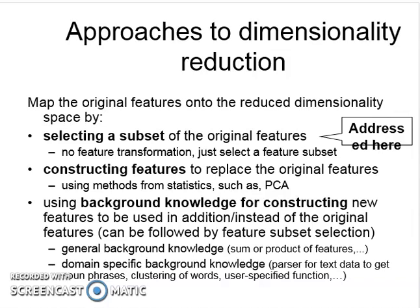The third approach is constructing features to replace the original features, using techniques such as PCA — we will see in the next video what PCA is. The fourth approach uses background knowledge to construct new features. Suppose domain-specific background knowledge is given; using that, we construct new features in addition to or instead of the original features. General background knowledge examples include products of features, noun phrases, clustering of words, and different types of user-specific features.